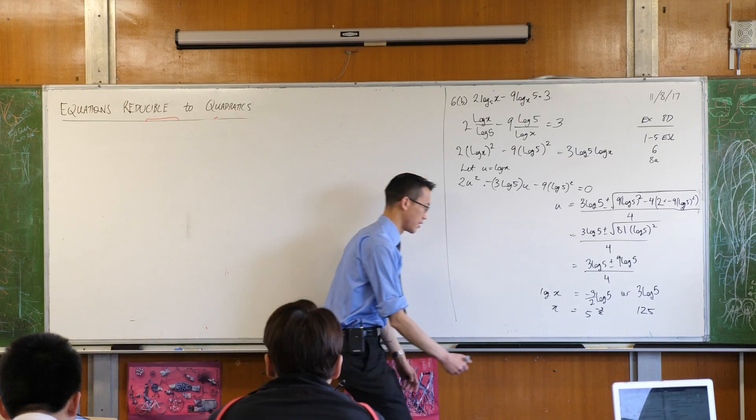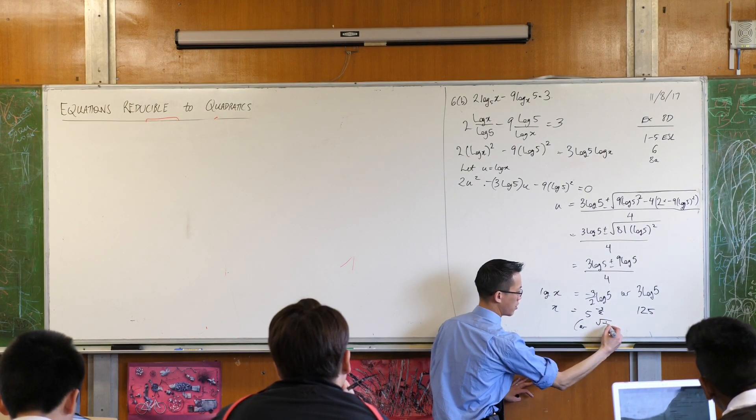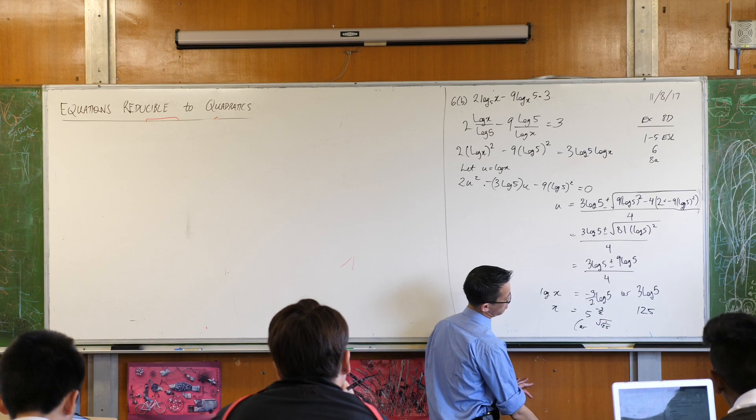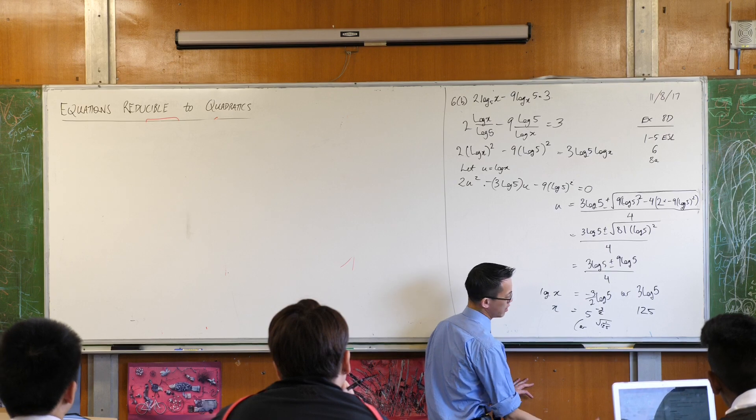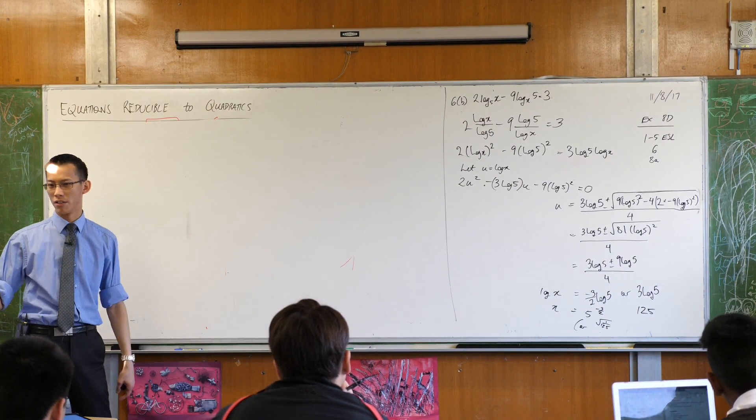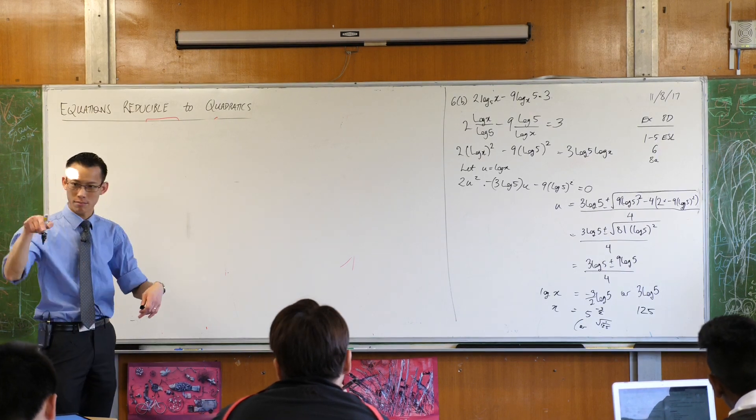Root 1 over 125. Root 1 on 125. Yeah, which is the same thing. And either of those are 1 on the square root of 125. Yeah, that makes sense. Because that's 5 cubed and then the square root's a half.